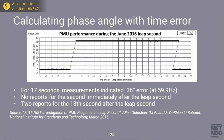Another thing they discovered was that the measurement equipment itself could not handle leap seconds. For 17 seconds there was in fact a 36-degree error at 59.9 Hz. There was no report for the second immediately after the leap second, and two reports for the 18th second after the leap second. This means that just after the leap second introduced in June 2016, no one really knew the state of the power grid in the US.